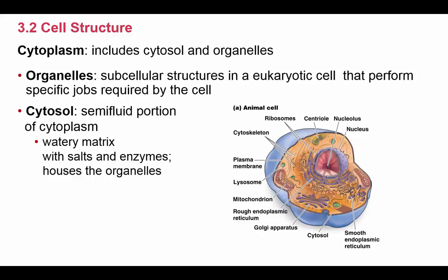This is covered in textbook section 3.2, page 59. We start with cytoplasm, which is basically the inside of the cell — it includes the cytosol and all of the organelles found in it. Organelles are subcellular structures found in eukaryotic cells, which are cells that have a nucleus. They perform specific jobs; organelles are to the cell what organs are to the entire body. The other part of the cytoplasm is the cytosol — a semi-fluid, watery matrix that all organelles sit in, containing salts, enzymes, and water.